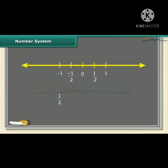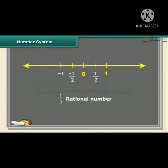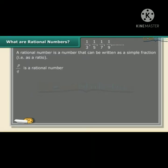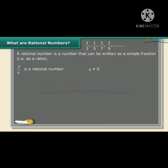Students, what about 1 by 2? Is it a whole number, natural number or an integer? You can see 1 by 2 lies between 0 and 1 — we call it a rational number. A rational number is a number that can be written as a simple fraction, that is as a ratio. P upon Q is a rational number, but the condition is Q is not equal to 0.